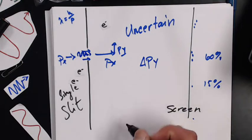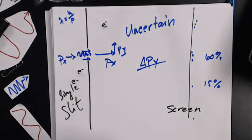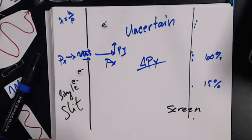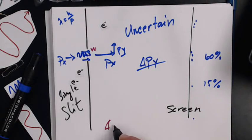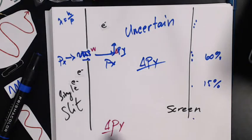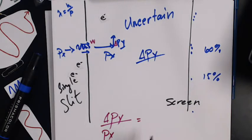I can relate this change in y to this slit width. So if I look at the change in momentum in the y-direction versus my momentum in the x-direction, momentum is h over lambda.